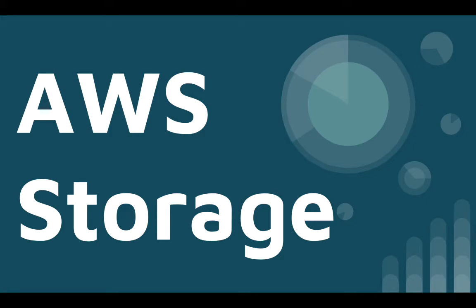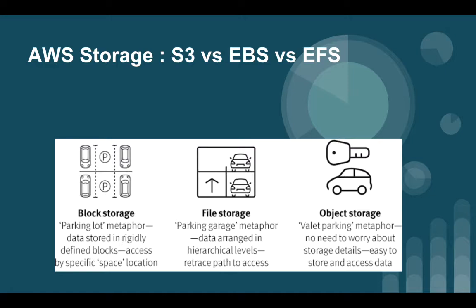Hello friends, welcome to this session. In this session we are going to see the different storage types: block level storage, file level storage, and object level storage. Amazon provides all three types of storage with its services. S3 is object level storage, Elastic Block Storage is block storage, and Elastic File System gives file storage.